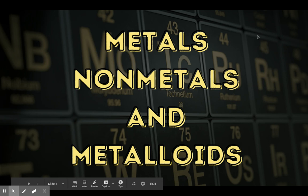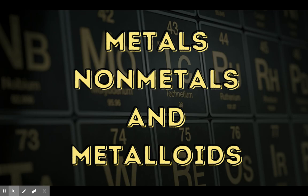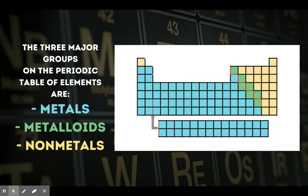Hello, everybody. Today we are going to be talking about metals, nonmetals, and metalloids. So on our periodic table, we have three major groups of elements, and these are metals, metalloids, and nonmetals.